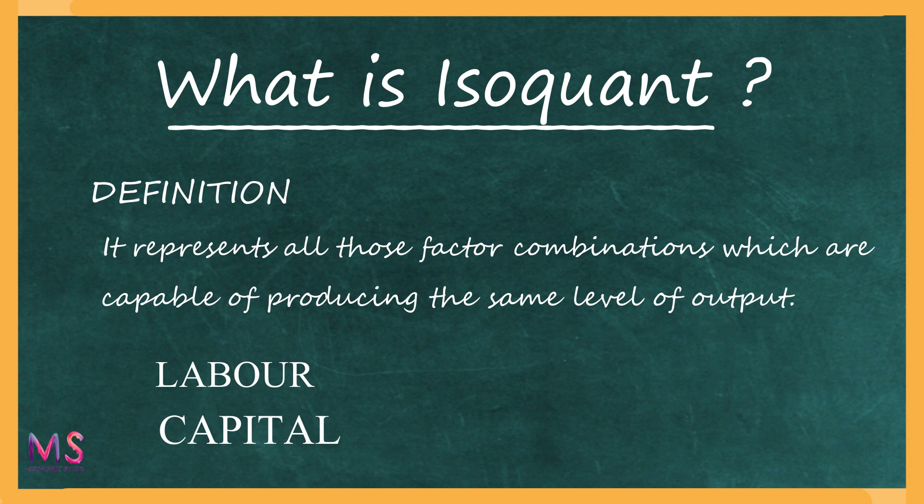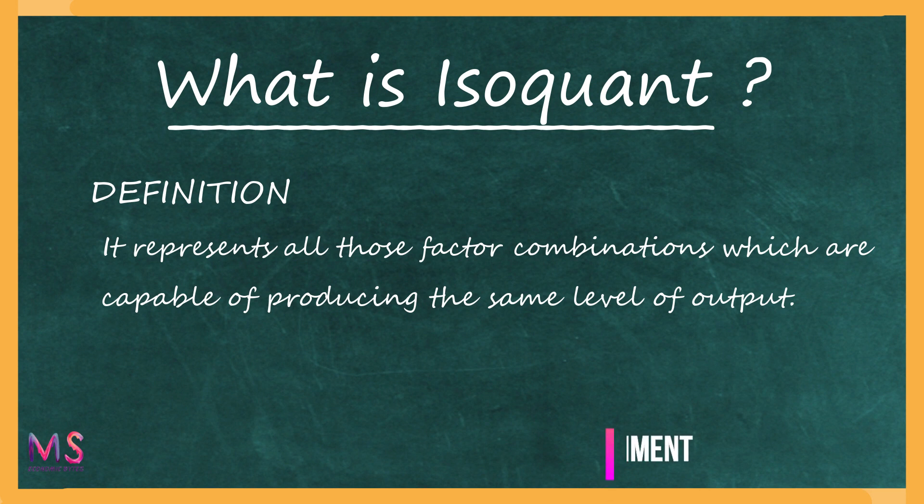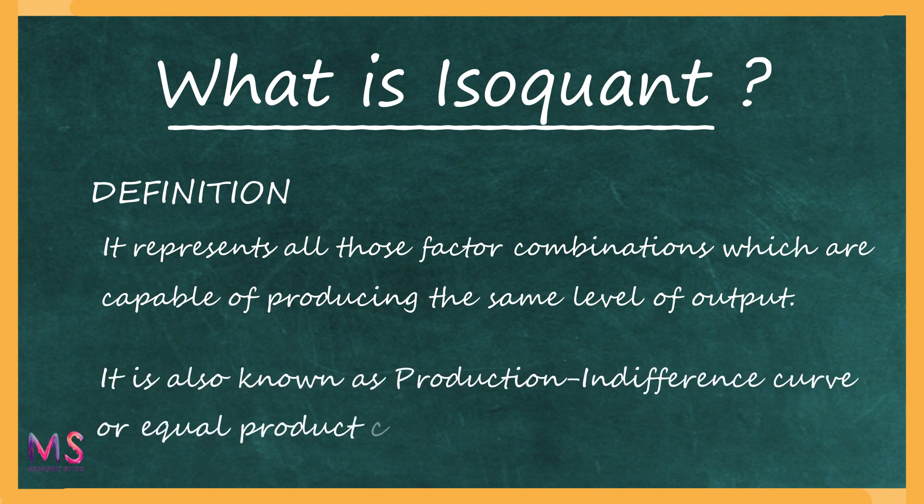Isoquant is basically a curve. The isoquant shows that any combination of labor and capital will produce the same level of output throughout the isoquant curve. The producer would be indifferent between any combination of inputs because ultimately the units of output produced are the same. Therefore, the isoquant is also known as a production indifference curve or equal product curve.